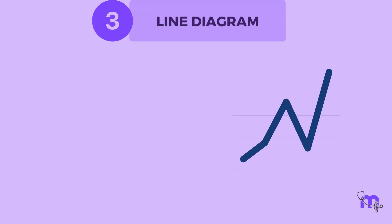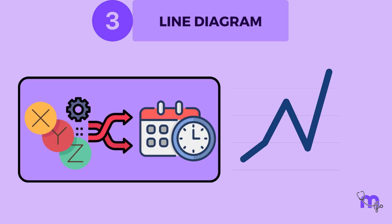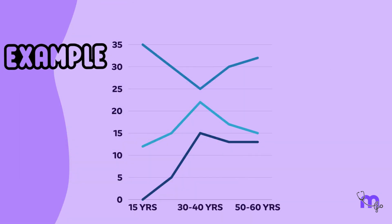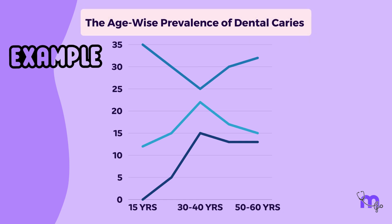The third type is a line diagram, which has been proven extremely useful to study the changes of values in a variable over time. On the x-axis, the time — such as hours, days, weeks, etc. — is represented, while the values of any quantity are represented along the y-axis. For example, the age-wise prevalence of dental caries can be plotted with the help of a line diagram.